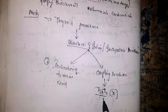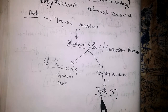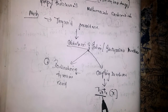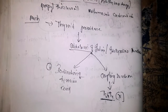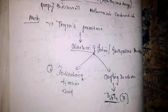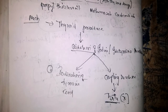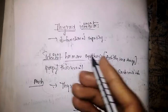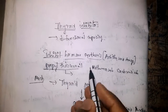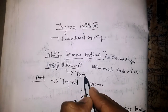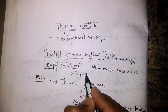Due to inhibition of the coupling reaction, T3 and T4 hormones will not be produced. As production of these hormones is inhibited, their levels will come down in the blood. There is one more mechanism that is peculiar to propylthiouracil.